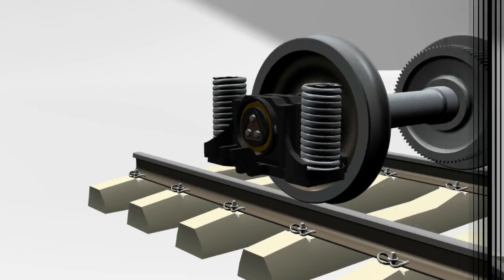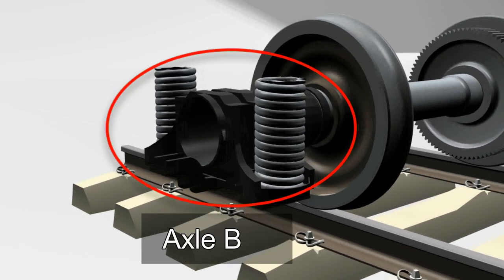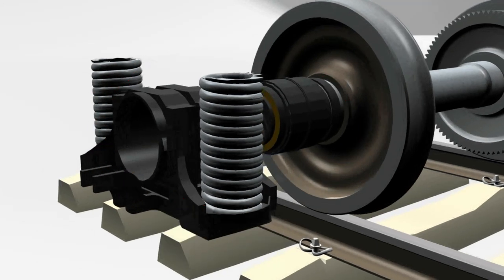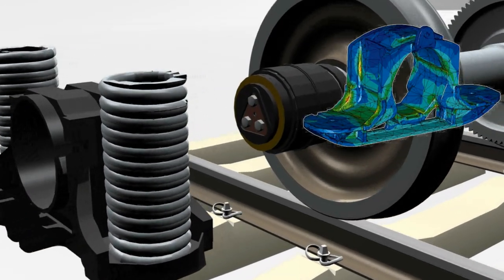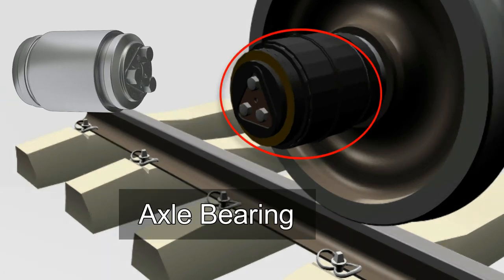Now let's explode this wheelset group to its simple components. Here is the axle box. Its function is transforming load from the bogie frame and cargo to the axle roller bearing. Here is the axle bearing.